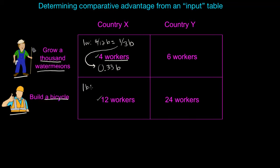For bicycles, twelve workers are needed. The question is how many watermelons could those twelve workers have produced? The answer is twelve divided by four, because three times as many workers are needed to produce a single bicycle as are needed to produce a thousand watermelons. So the opportunity cost of bicycles in terms of watermelons is what could have been produced with those twelve workers, which is three thousand watermelons. Three thousand watermelons are given up for every bicycle produced because the twelve workers needed to produce a bicycle could have produced twelve over four watermelons.